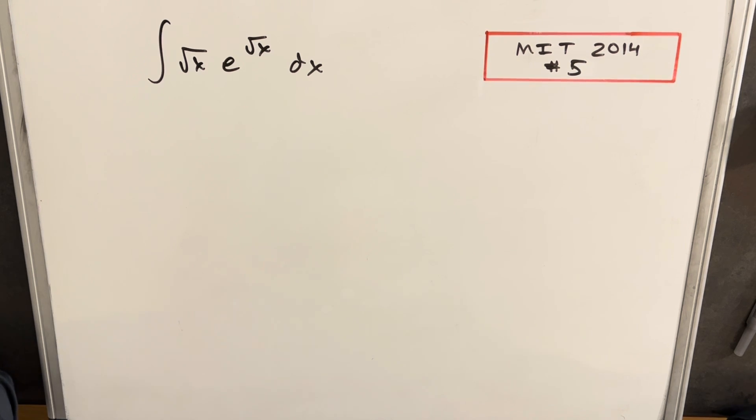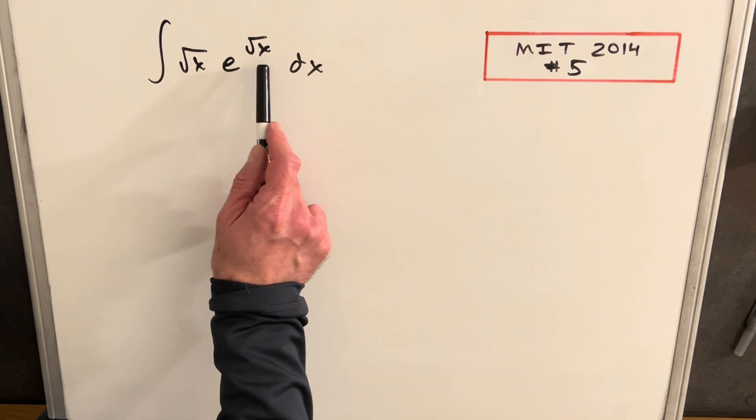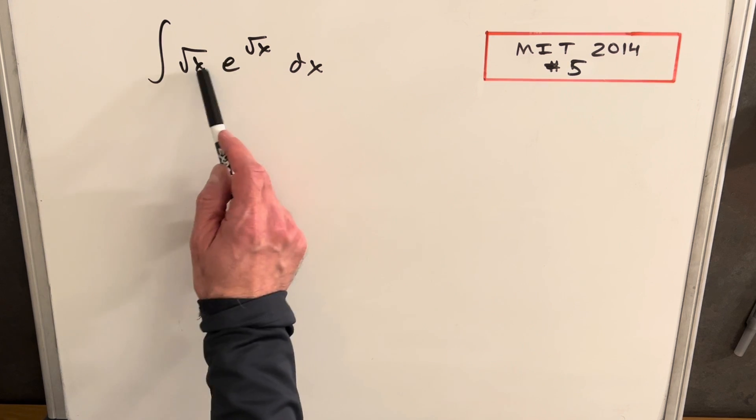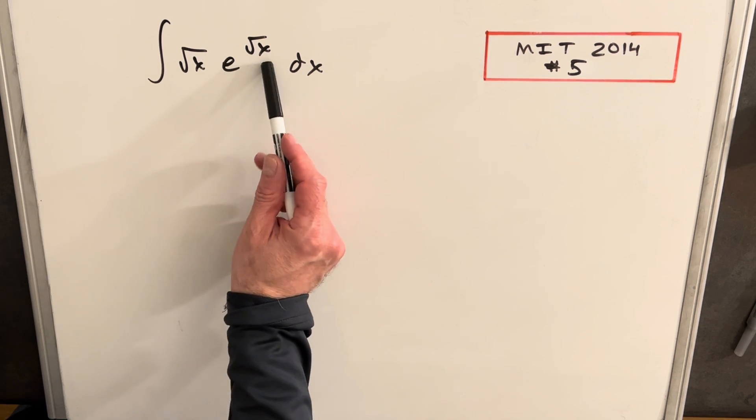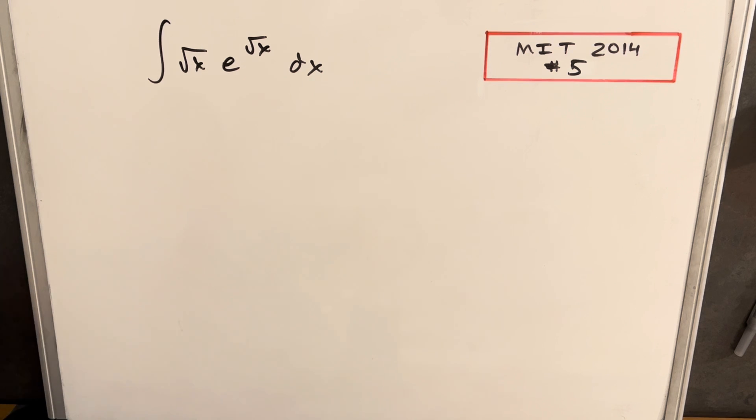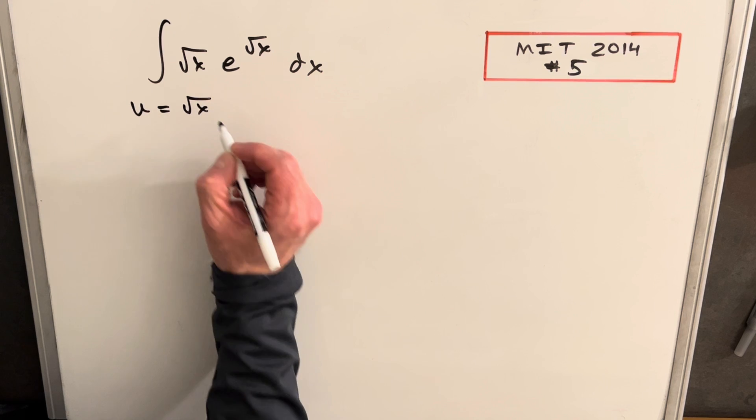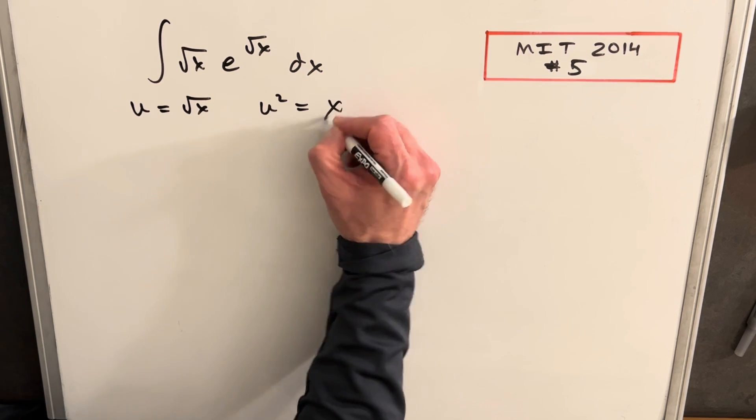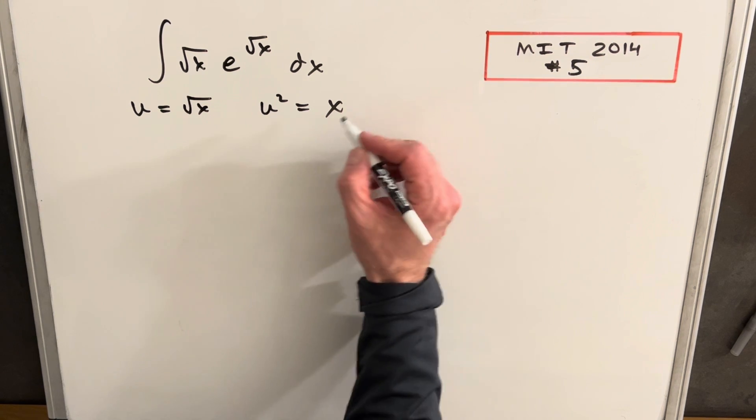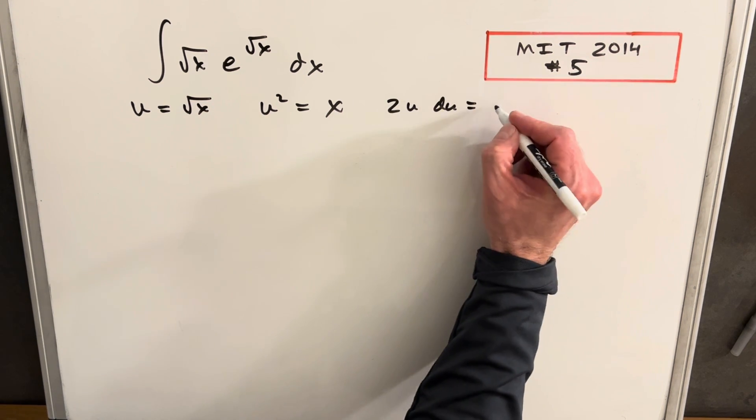To start, I think I want to do the obvious thing and just do a u substitution because if we set u equal to square root x, it's going to simplify the exponent in this term in front. Let's make a u substitution and call our square root of x u and see where that gets us. So we'll say u equals square root of x. Then I can square both sides and say u squared equals x. Then if we take a derivative here, we're going to have 2u du equals dx.